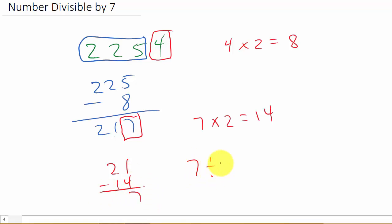And that leaves us with 7, and 7 divided by 7 is 1. And so that means that 7 divides into this entire number evenly.